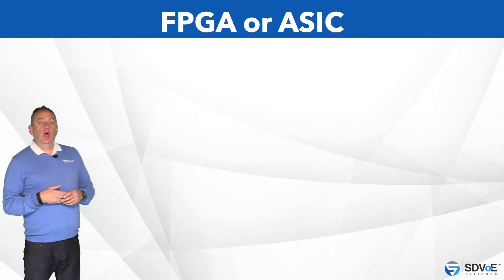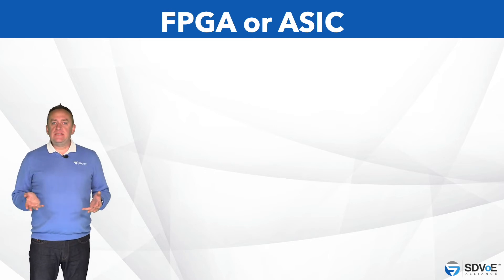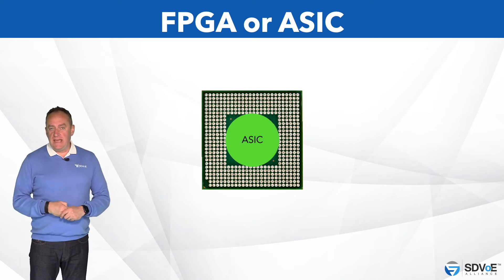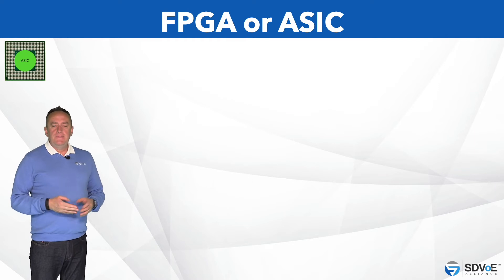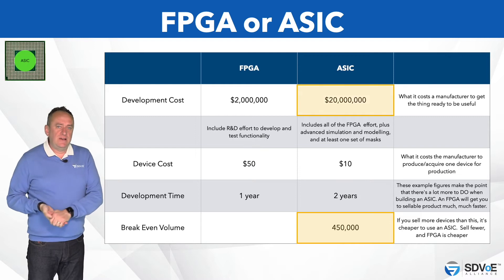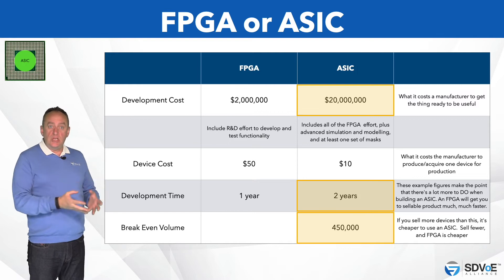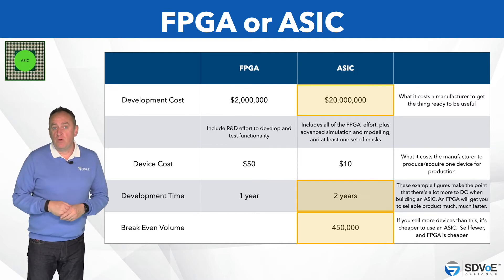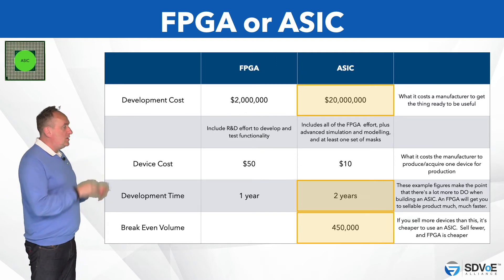If the manufacturer ultimately plans to sell millions of these devices, then they'll plan to develop ASICs once all the functionality of the product has been fully validated using the FPGAs. There's a lot more to do when developing an ASIC and it's extremely expensive in both time and cash to develop one. Once the ASIC is ready, products will transition to the cheaper per-unit ASIC to reduce costs or improve margins, which in turn will pay off the huge ASIC development costs that have been incurred.